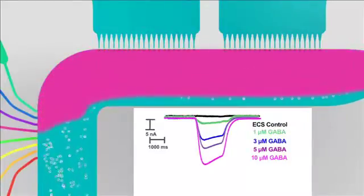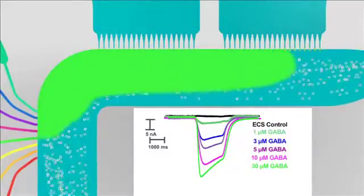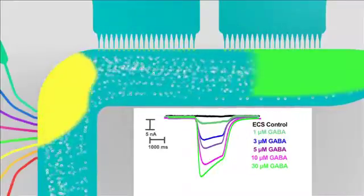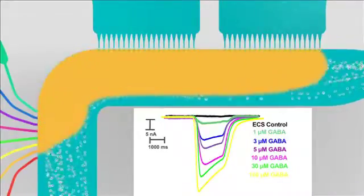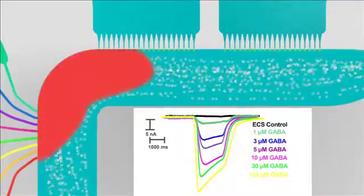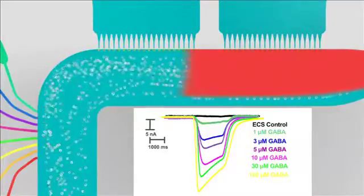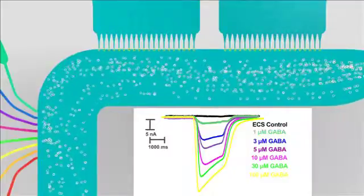In between compound additions, the compounds are washed away while the system continues to record. Because of the unique nature of the fluidic perfusion system, many workflow options are available including cumulative responses and compound repeats. Once the workflow is complete, the plate is ejected from the system and ready for the next experiment.